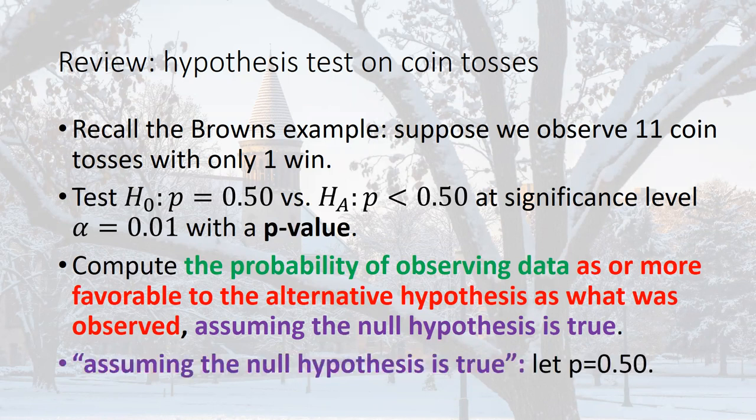The easiest part is 'assuming the null hypothesis is true.' Any definition of a p-value will have a clause about assuming the null is true. In this problem we assume p is 50%. We did that anyway when we did hypothesis testing previously and computed an observed statistic to see if it was in the rejection region. So assuming the null is true in this case means we assume p really is 50% and see what happens.